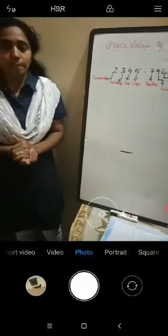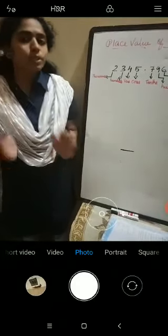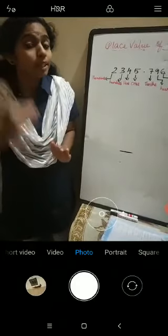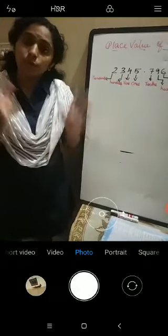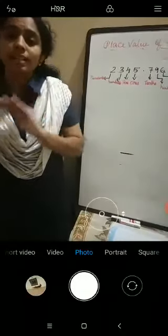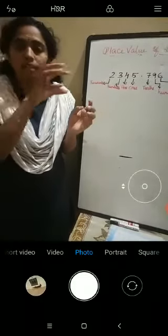Now today we will learn the place value of a decimal number. So before going to the decimal number first you tell me what is the place value of a normal number? How it will from the right side we have to start? Ones, tens, hundreds, thousands, ten thousands, lakh, ten lakh and so on. But the right side I mean so there will be a whole number part. I am giving you such an example. There is a whole number part then decimal point then the decimal places.